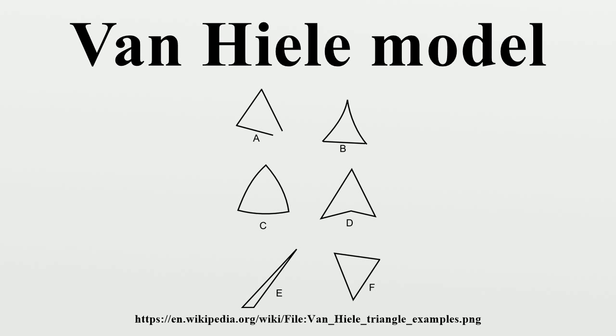Level 4: Rigor. At this level geometry is understood at the level of a mathematician. Students understand that definitions are arbitrary and need not actually refer to any concrete realization. The object of thought is deductive geometric systems, for which the learner compares axiomatic systems. Learners can study non-Euclidean geometries with understanding. People can understand the discipline of geometry and how it differs philosophically from non-mathematical studies. American researchers renumbered the levels as 1 to 5 so that they could add a level 0, which described young children who could not identify shapes at all. Both numbering systems are still in use. Some researchers also give different names to the levels.